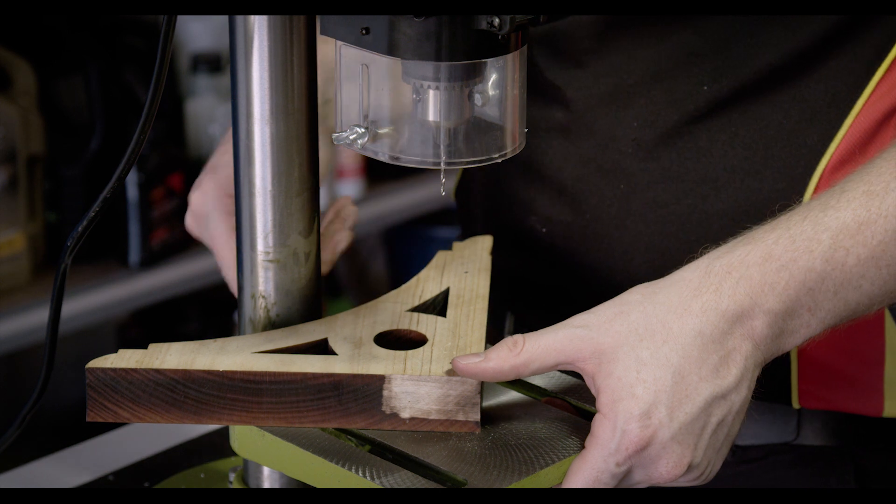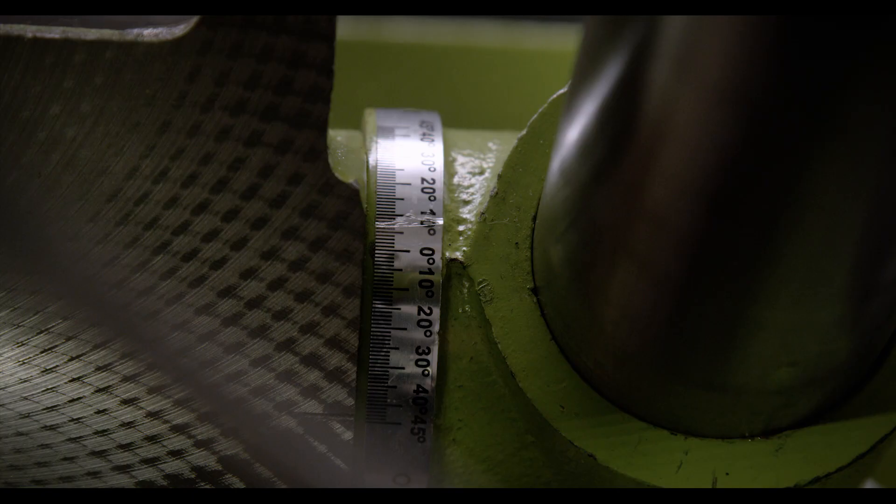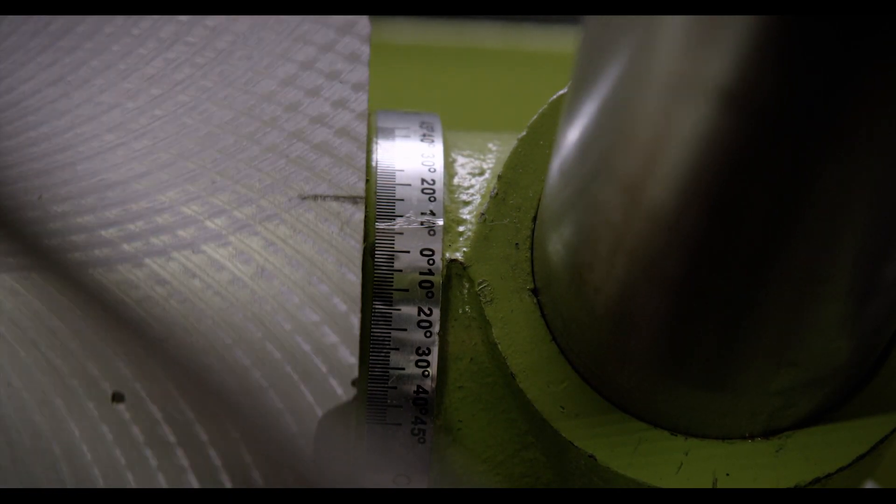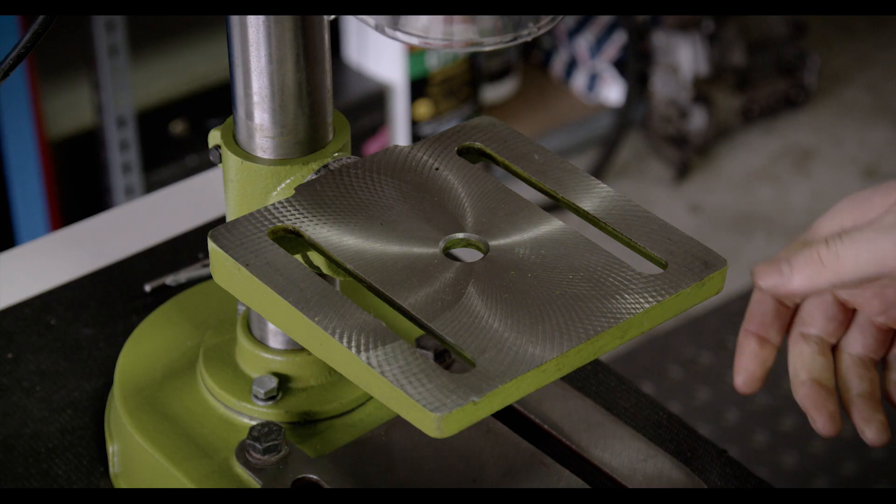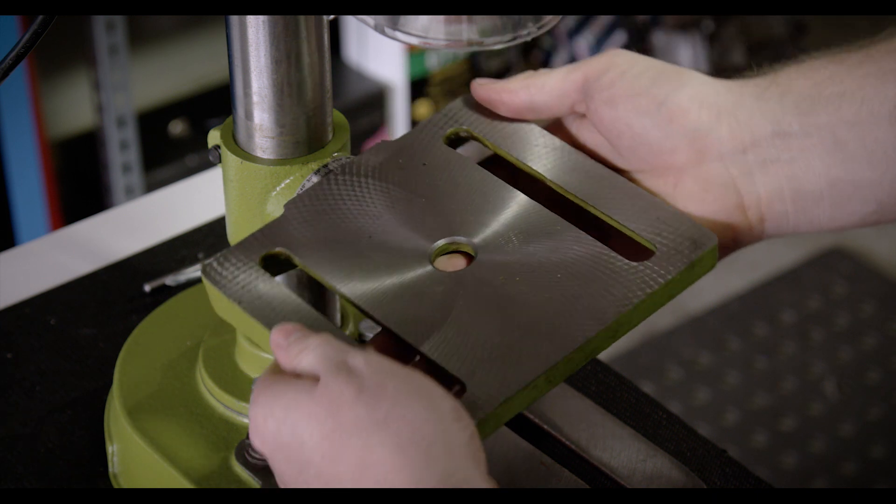If you want to drill a perfectly straight hole, check the angle of the table using the attached guide. For a straight hole, it must be on 0 degrees. However, it is adjustable 45 degrees either way, allowing you to drill accurate holes on an angle.